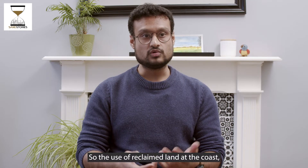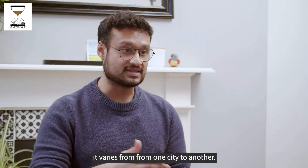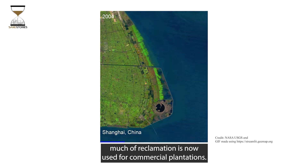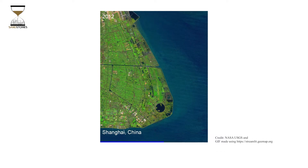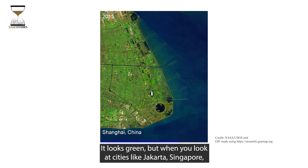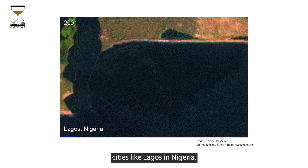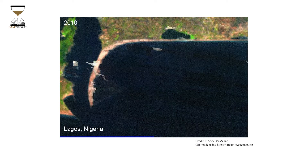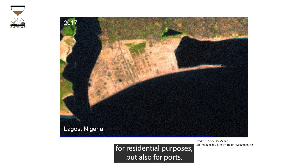The use of reclaimed land at the coast varies from one city to another. In Shanghai, much of the reclamation is now used for commercial plantation — from satellite images it looks green. But when you look at cities like Jakarta, Singapore, Lagos in Nigeria, and Luanda in Angola, these cities are reclaiming land for residential purposes as well as for ports.